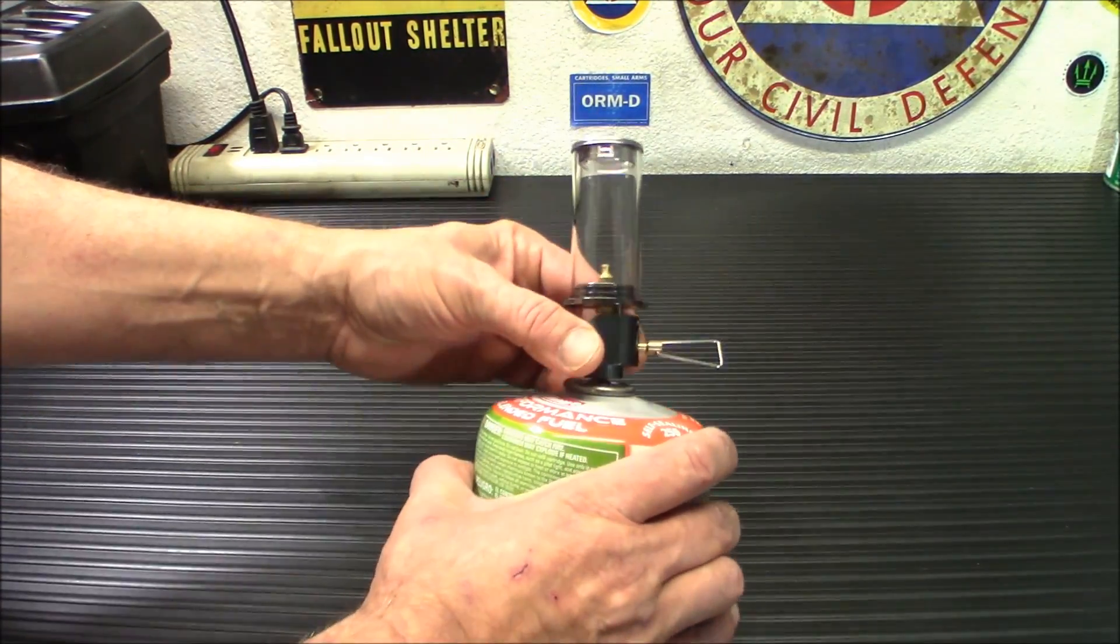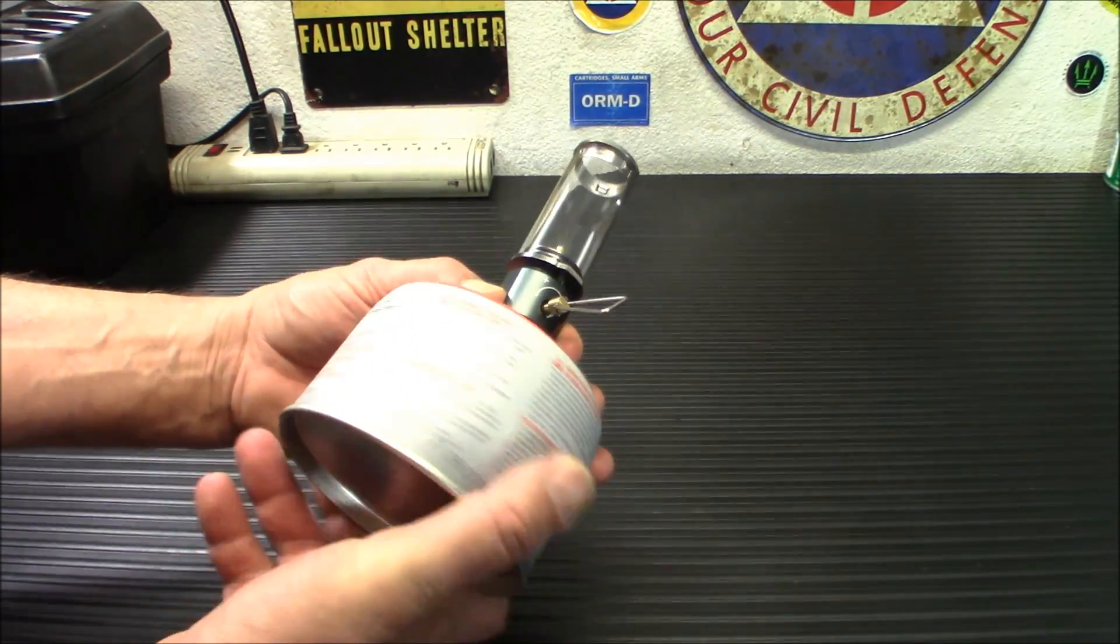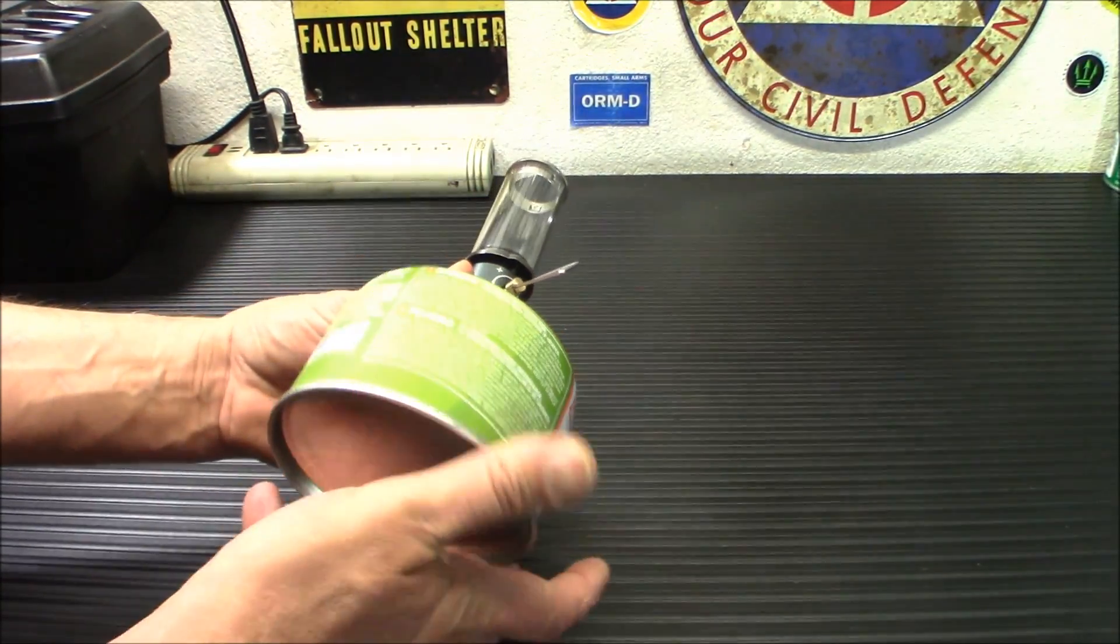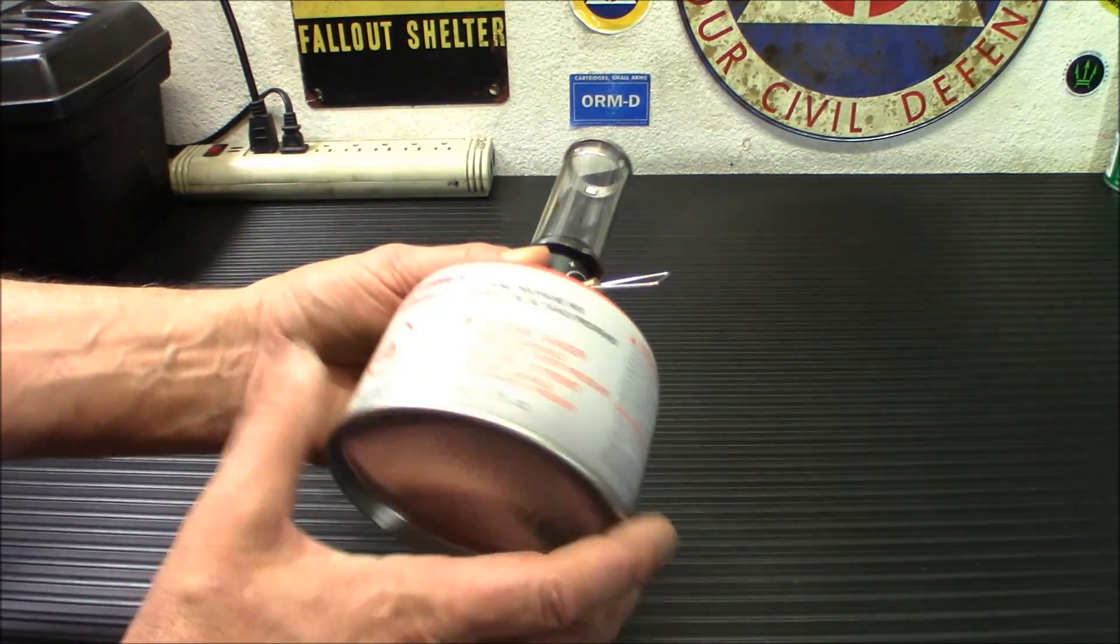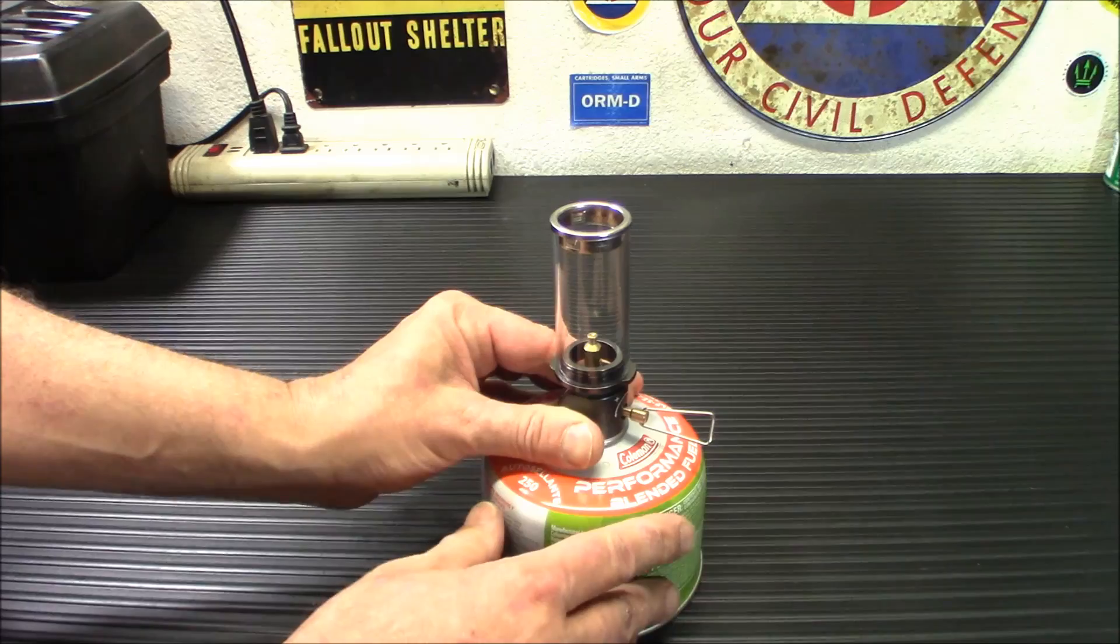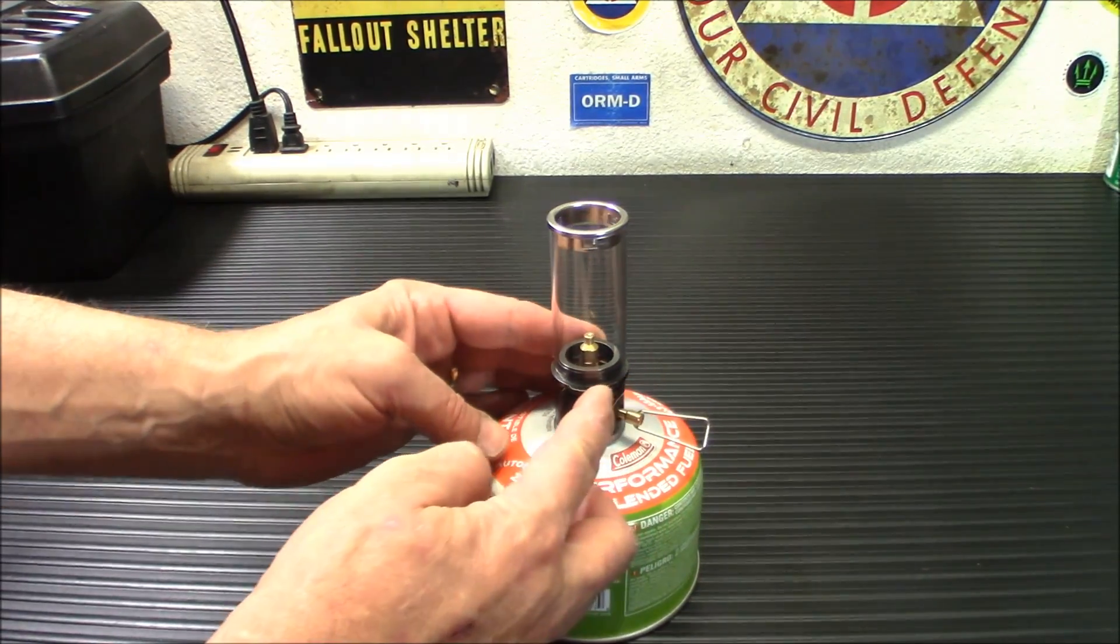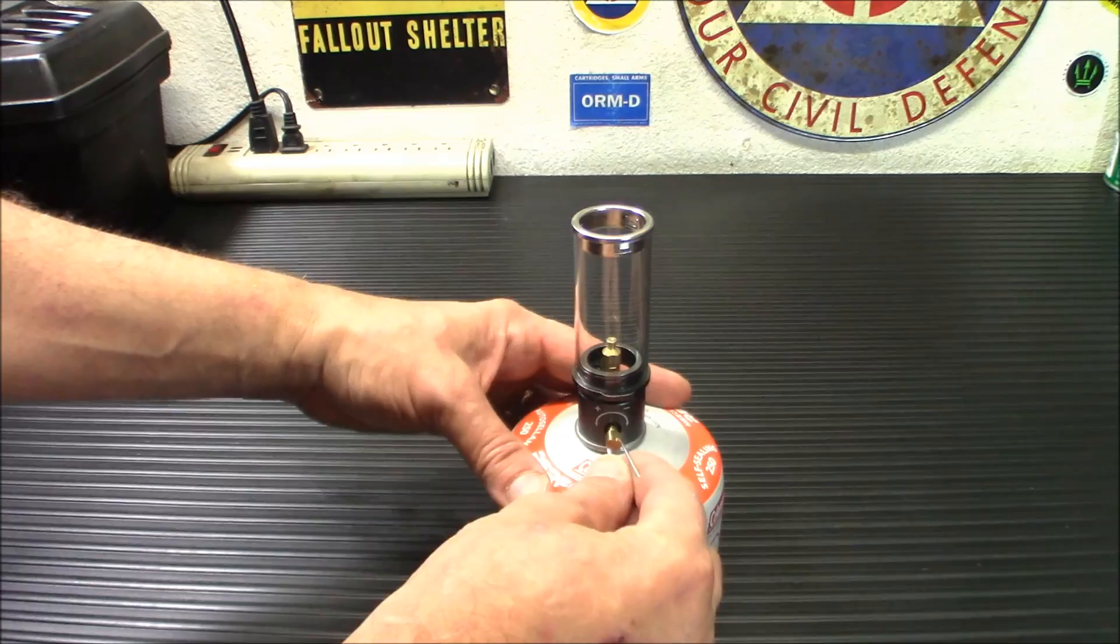So to work it, you're just going to screw it onto your canister. There we go. And you're going to control the up or down flame with this ring here. It's really a pretty simple item. I'm going to turn on the gas here.